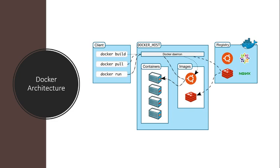Images can be built with the Docker build command and they can be standalone or inherit from other images. Images are stored in a Docker registry, which can be public or private, local or remote. Docker Hub is a popular public registry managed by Docker and contains a huge collection of images that anyone may use.